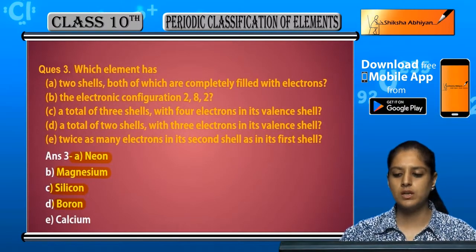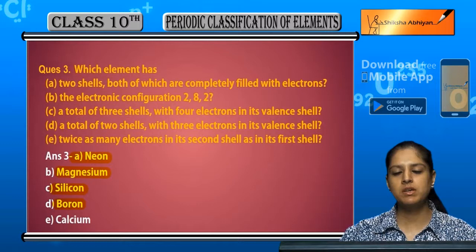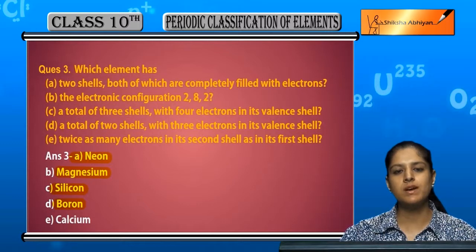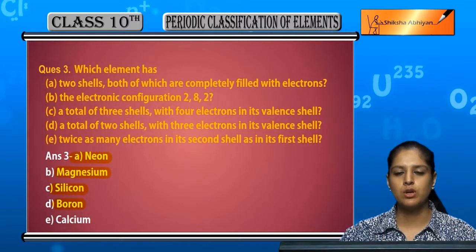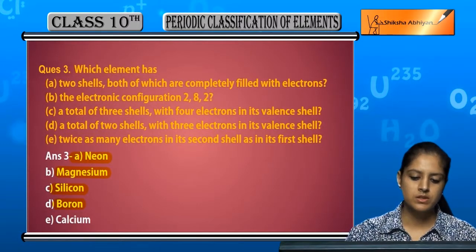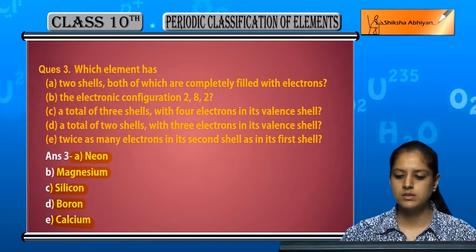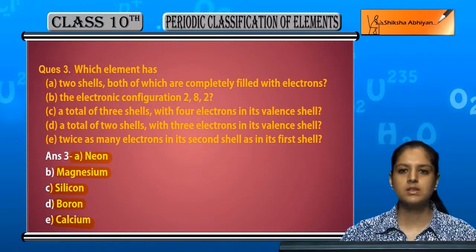Twice as many electrons in its second shell as in the first shell: the first shell has 2, so the second shell has twice that, which is 4. That gives us the configuration 2,4 — a total of 6 electrons — so that element is Carbon.